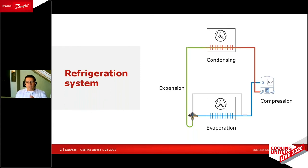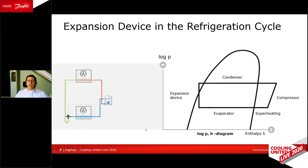Let's look at the refrigeration system — you all know how that looks. We have a compressor, a condenser, an expansion valve, and an evaporator. If we draw that system into a log pH diagram, we find this diagram here. If we want to make a system quite efficient, there is the possibility to play around with superheat settings.